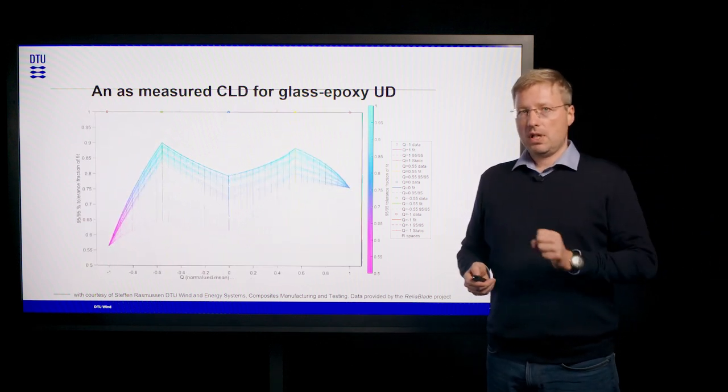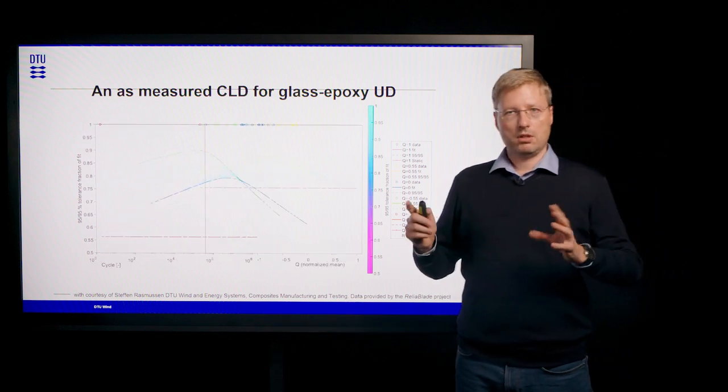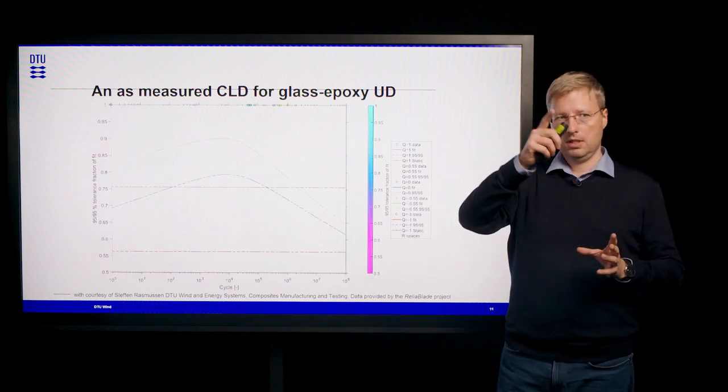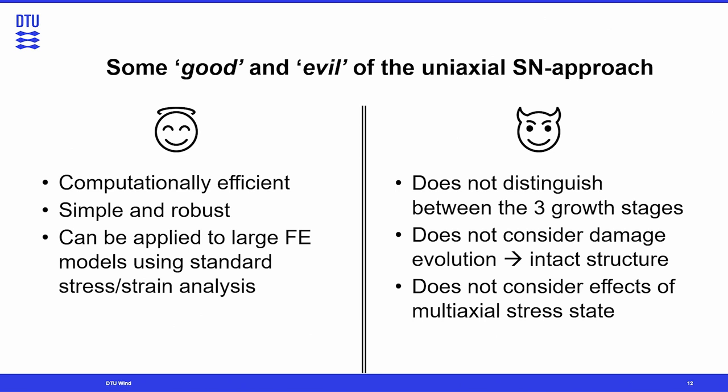The constant life diagram in composite materials forms an irregular polygon in the amplitude mean stress space. Now that we have established the constant life diagram and the SN curves, we can look at the advantages and disadvantages of the SN approach.